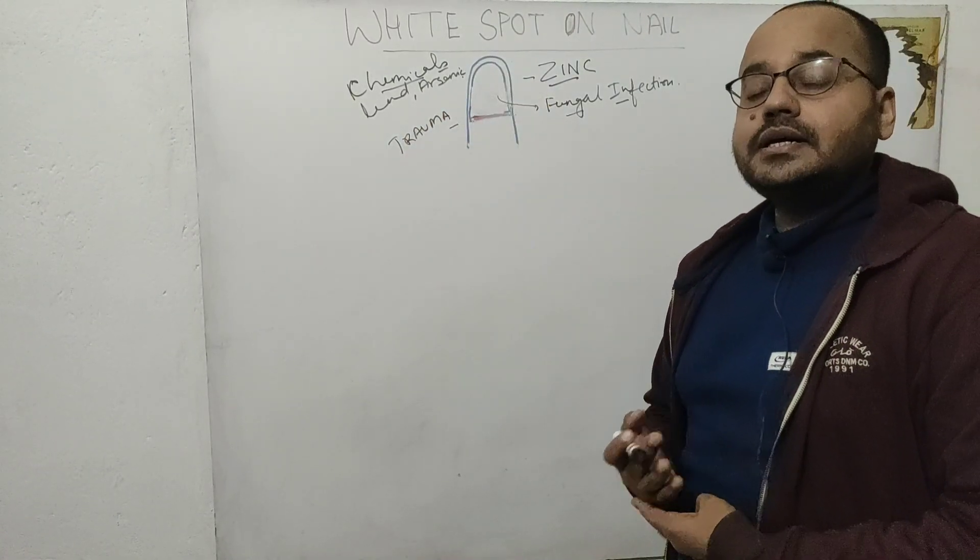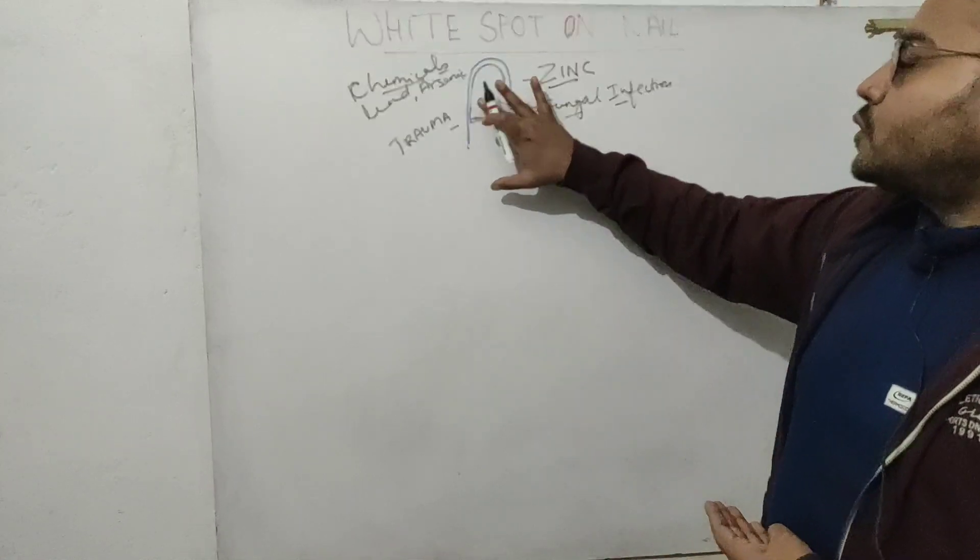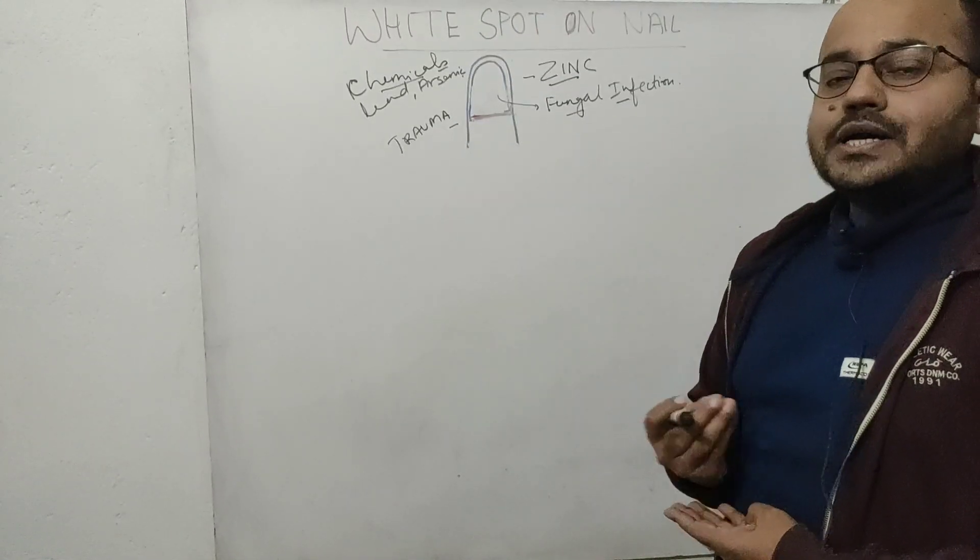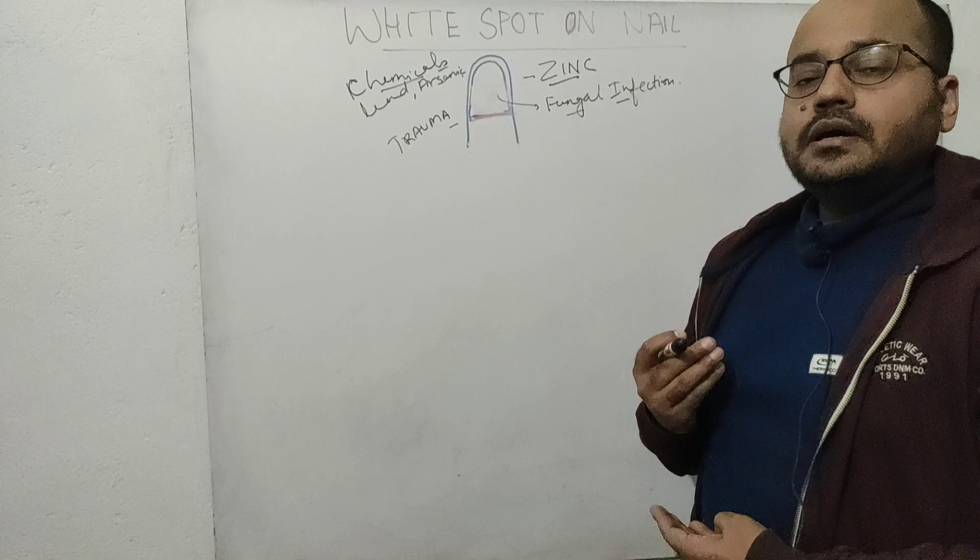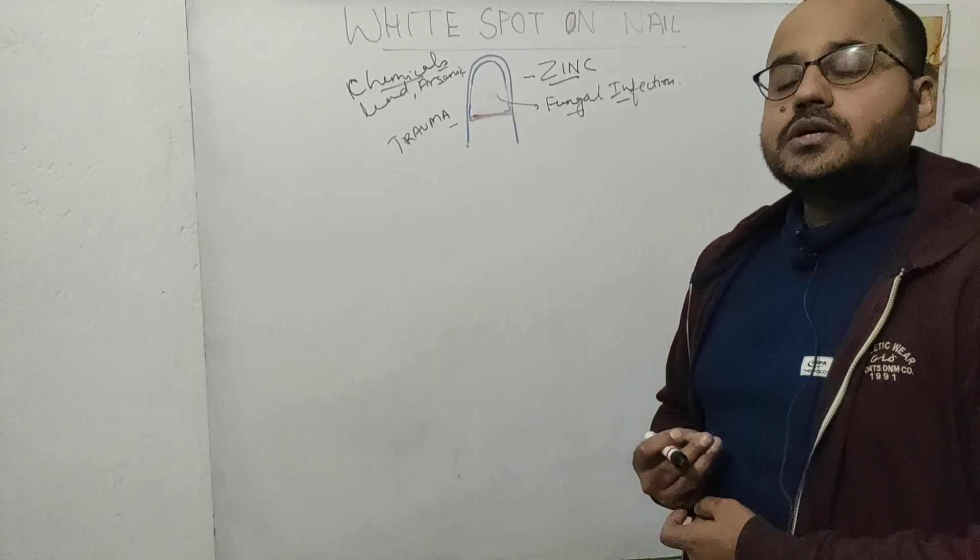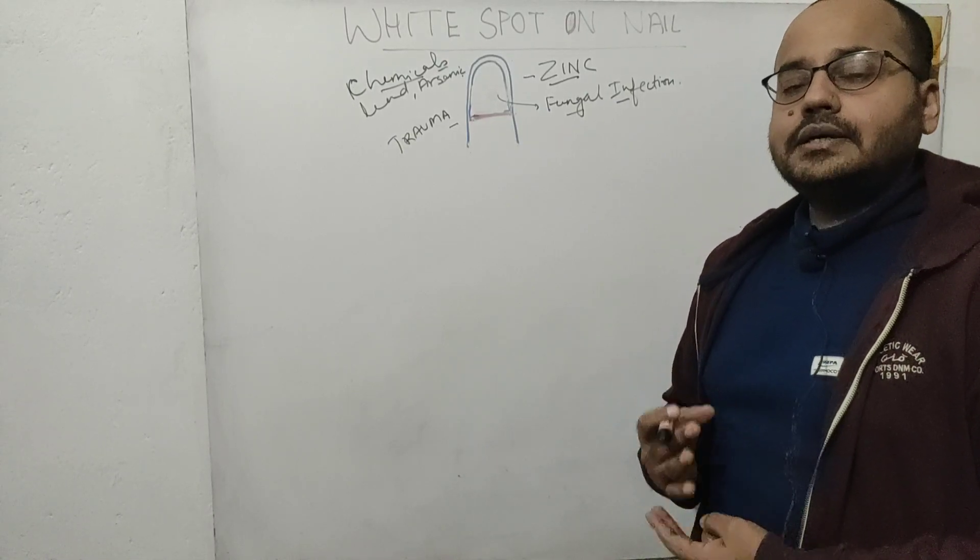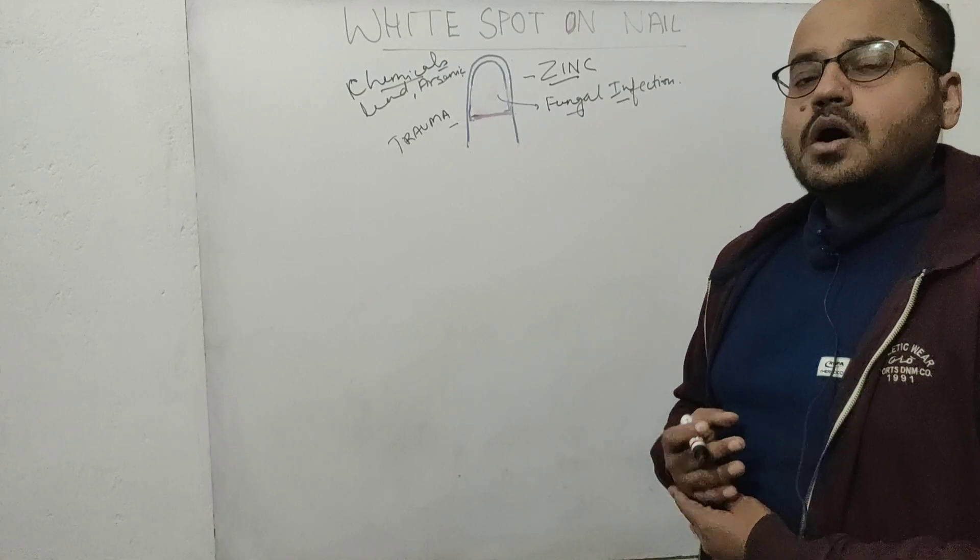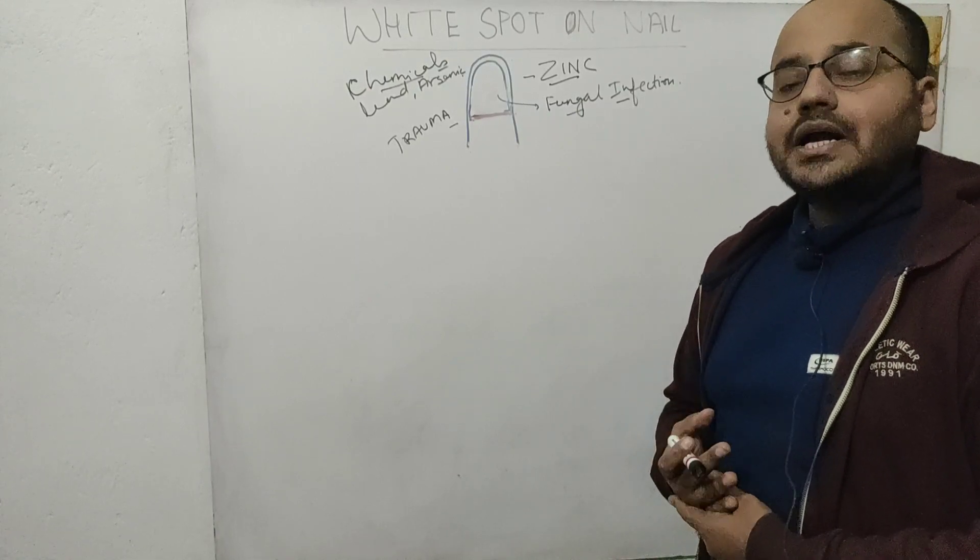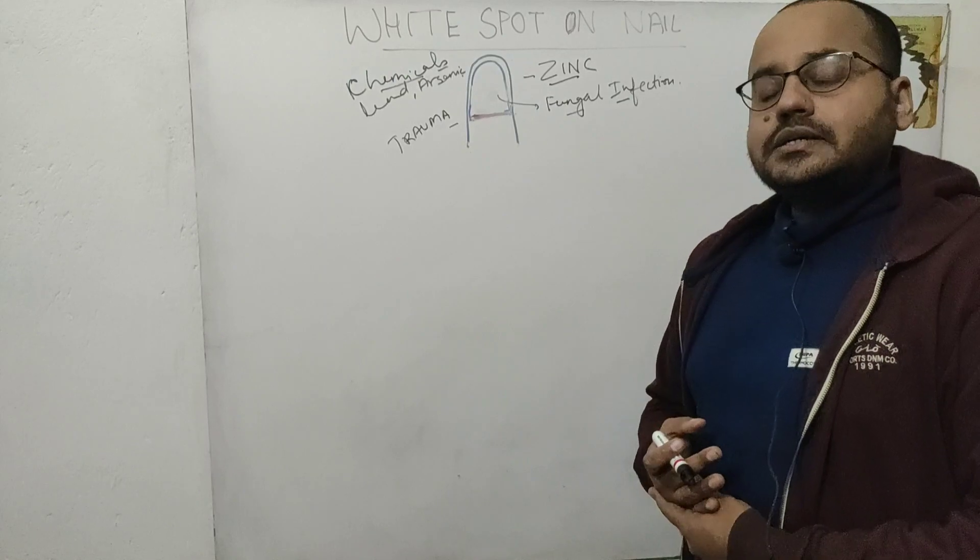Then there are certain other conditions in which your whole nail plate may become whitish. We see that in conditions where less albumin is present in your blood, like in cirrhosis, nephrotic syndrome, congestive cardiac failure, malignancy, or arthritis.